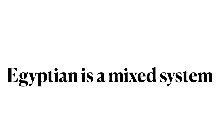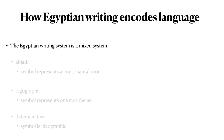Ancient Egyptian hieroglyphics represents a mixed writing system. That means that symbols could be used in one of at least three ways. One important aspect of the Egyptian writing system functions as an abjad. In the abjad, symbols represent consonants — more specifically, a consonantal root. We'll look in more detail in a few slides at what a consonantal root looks like.